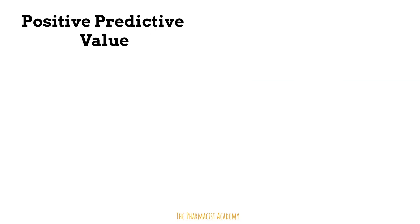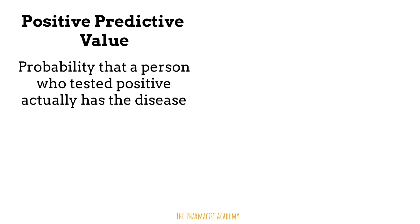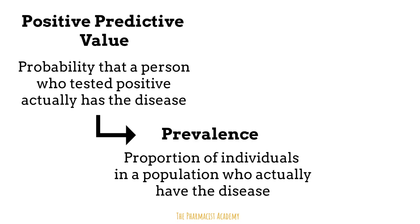The PPV of a test tells us the probability that a person who tested positive actually has the disease. This is good because it can possibly filter out any false positives. It does this by taking into consideration the disease prevalence in the population. Prevalence is the proportion of people in a population who already have a disease at a specific point in time. This prevalence represents the general population before we even start testing. So when we say a disease is more prevalent in a certain population, it means a lot of people have the disease.